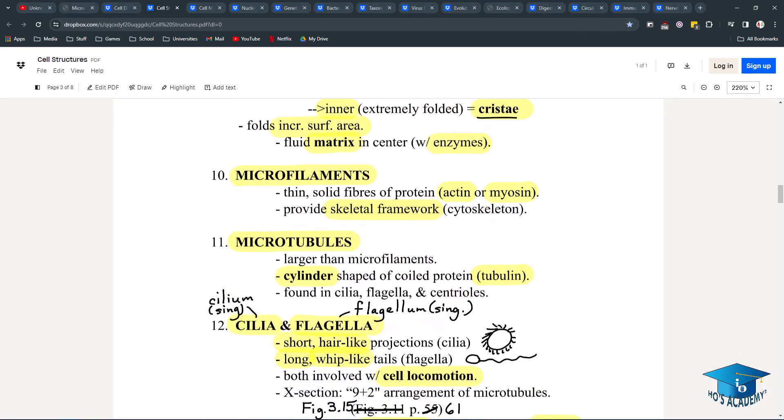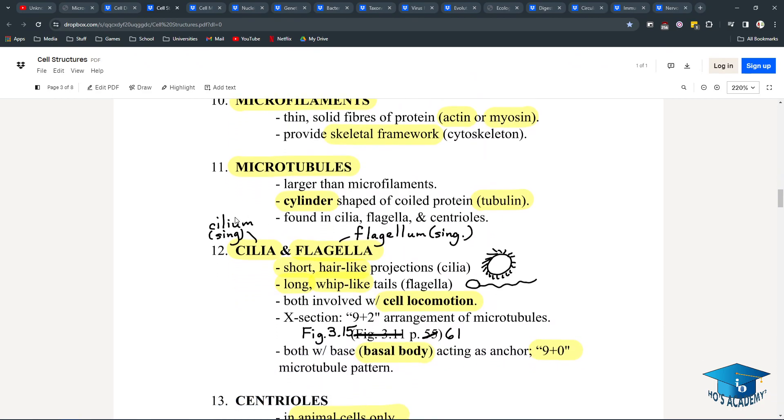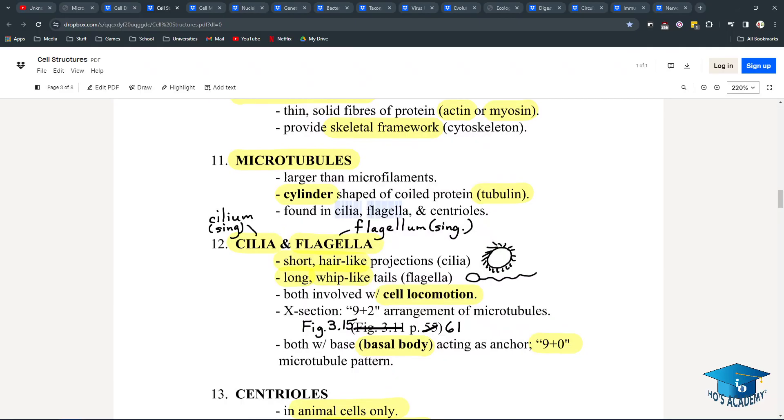Microfilaments are thin, solid fibers of protein, either actin or myosin, and they provide the skeletal framework of the cell. They're the cytoskeleton. Microtubules are larger than microfilaments. They're cylinder-shaped of coiled protein, like tubulin. They're for the cilia, flagella, and centrioles. They'd probably be used for pili as well.